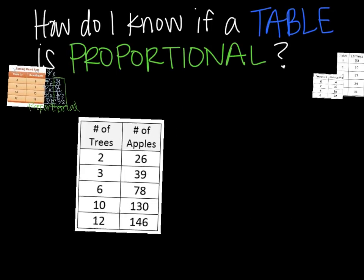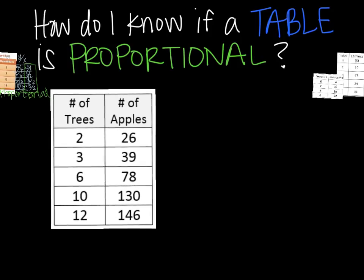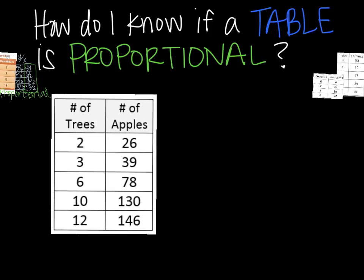Let's try another one. Here we have the number of trees and the number of apples. So again, you're going to have to extend out that table. So, okay, this is x, this is y. Slope is your y over your x, change in y over change in x. So what we need to do is take 26 over 2, simplify.